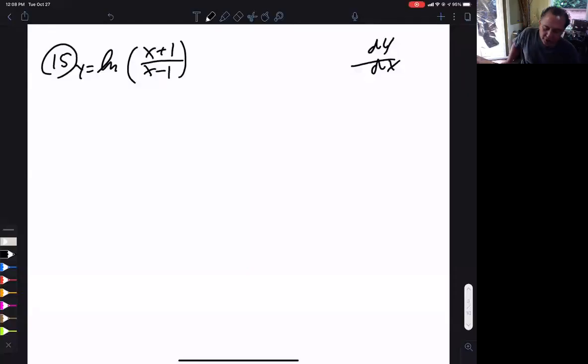This is number 15 from section 3.8. They're looking for dy dx, so y is our function, x is our variable, so everything looks pretty straightforward here.